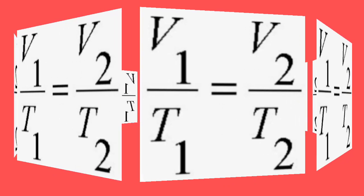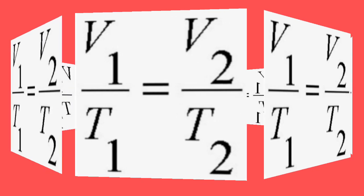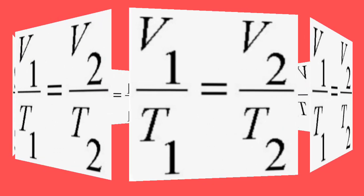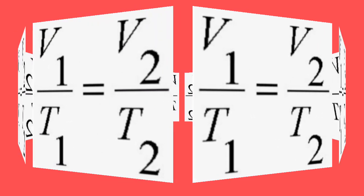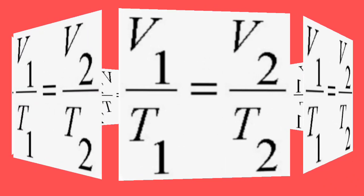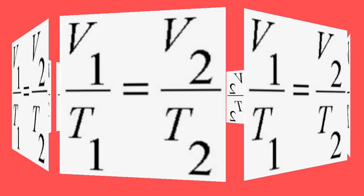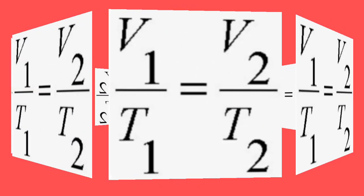इस नियम के हिसाब से ये नियम ये कहता है कि अगर हम किसी भी ideal gas का pressure को constant रखें और हम उसका temperature बढ़ाएं तो उसका volume भी बढ़ेगा. मतलब, volume और temperature आपस में proportional हैं.